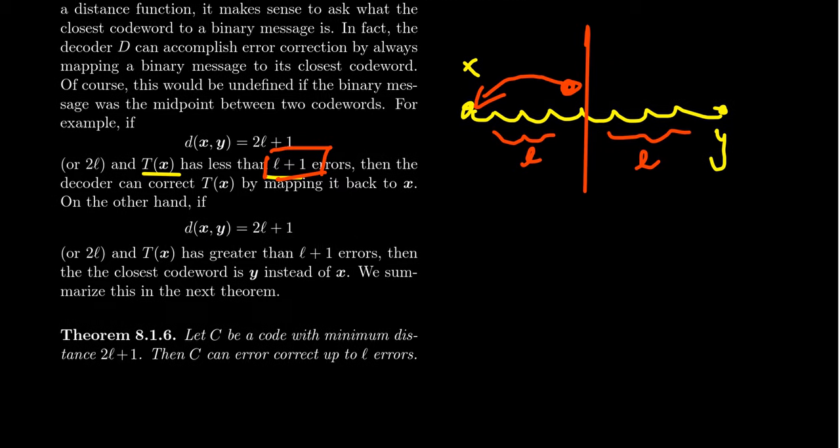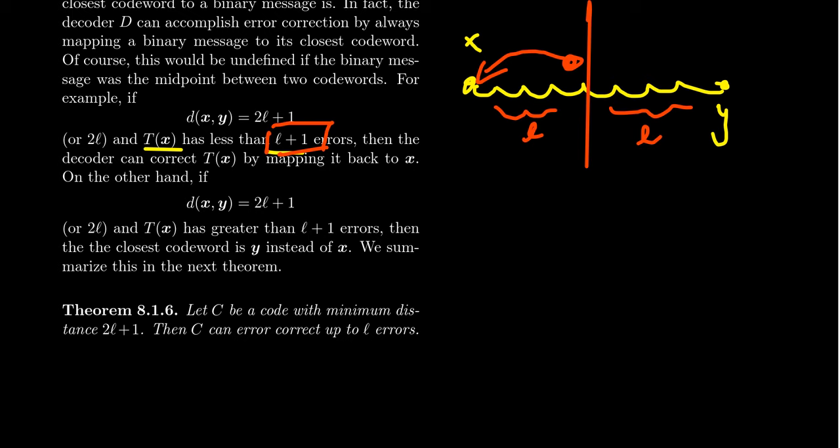But the point is, we can detect up to l many errors and correct them if this distance is 2l plus 1. And so summarizing what we're trying to see right here is if we have a code for which the minimum distance is 2l plus 1, we could detect up to 2l many errors, but we can actually correct up to l many errors. So let me show you what this might look like.